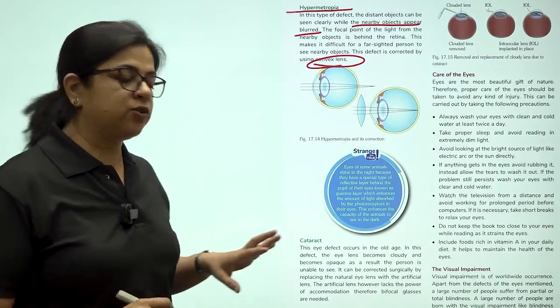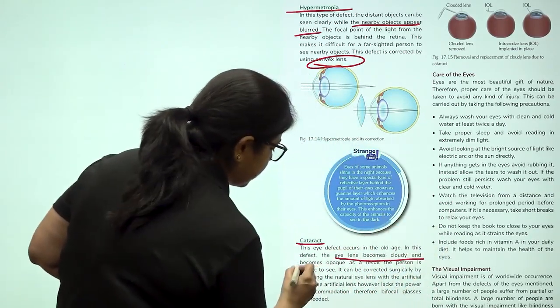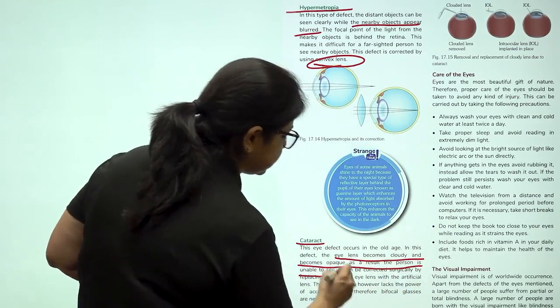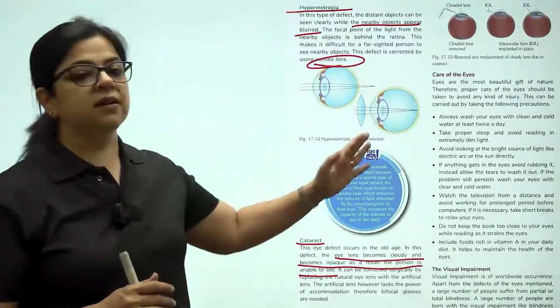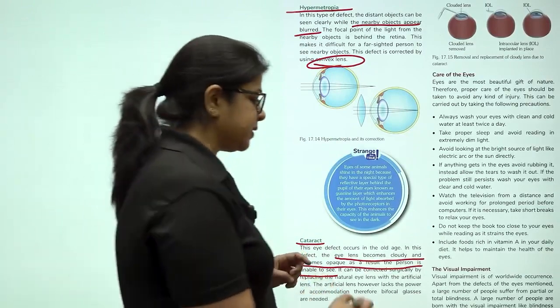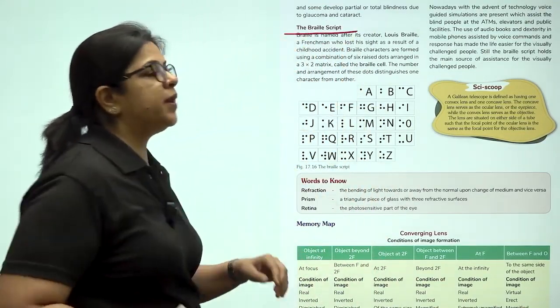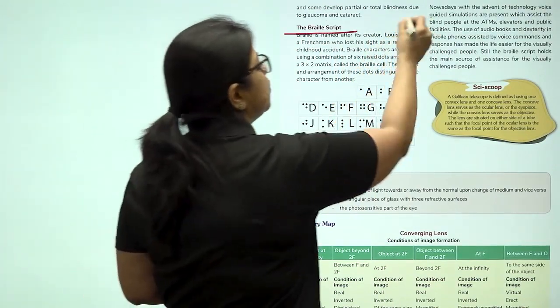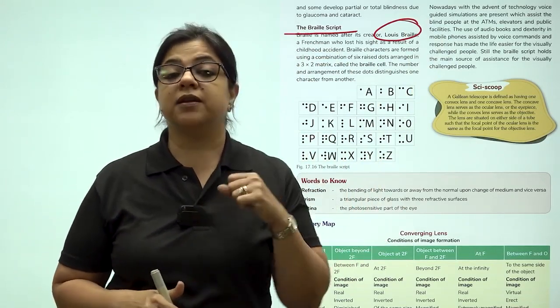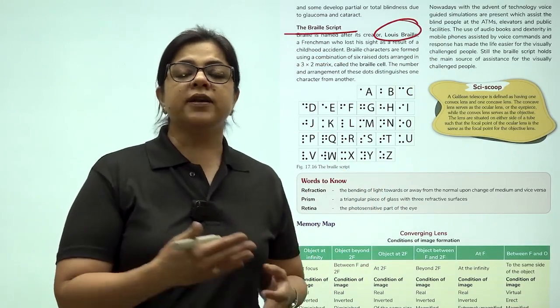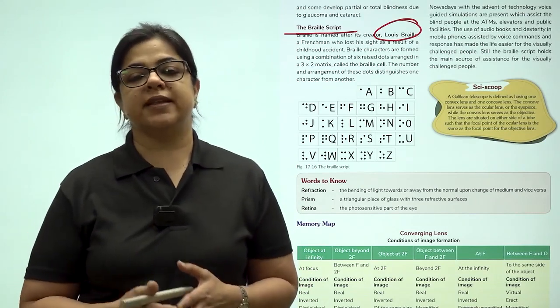There is another defect of eye which is known as cataract. What is cataract? In cataract the eye lens becomes cloudy and opaque. As a result the person is unable to see. Cataract can be treated surgically. And we have already learnt about how to take care of our eyes. There are also people who are visually impaired. Blind people use the Braille script which was developed by Louis Braille to read and understand the different subjects. There can be many reasons for visual impairment. One can be visually impaired from birth because of a genetic effect or they can develop visual impairment over their life because of lack of certain nutrients in their diet.